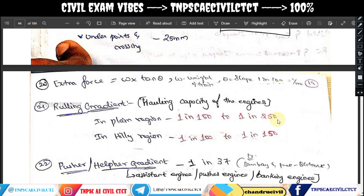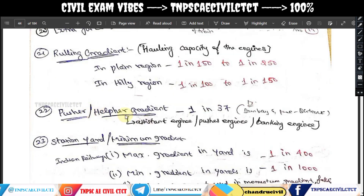Ruling gradient — you can see the values. For one area, it is 1 in 250. For hilly regions, we use 1 in 150. For the pusher gradient, an assistant engine is used on a slope. This applies to steep sections.